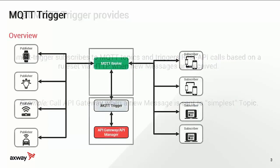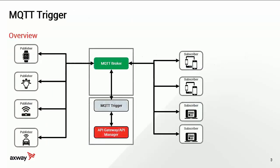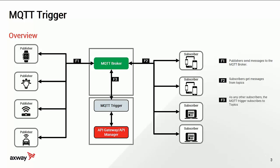From an overview perspective, it looks like this. You have different publishers connected to an MQTT broker, which publish messages to that broker. Then you have subscribers who subscribe to topics, and the trigger subscribes in a similar way to the broker.